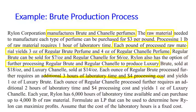Notice where it says "has the option" — this means it is a decision variable, because you need to decide whether to do that or not. Ryland has 6,000 hours of laboratory time available and can purchase up to 4,000 pounds of raw material — these are the constraints. Finally, the objective of this problem is that Ryland Corporation wants to maximize profits.